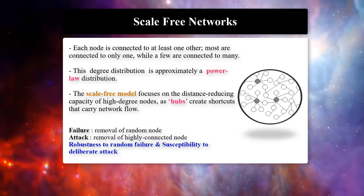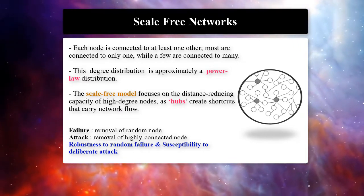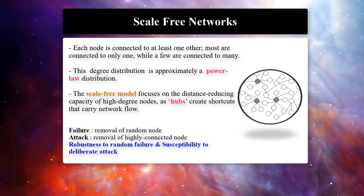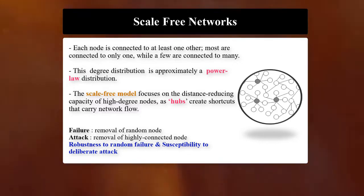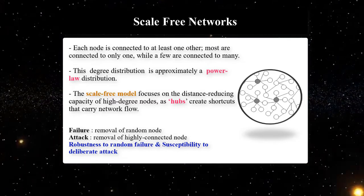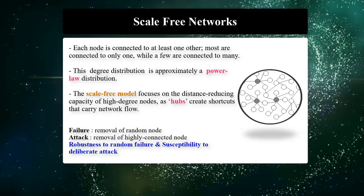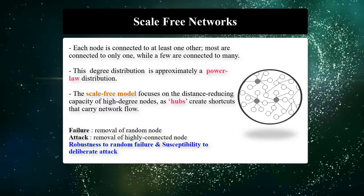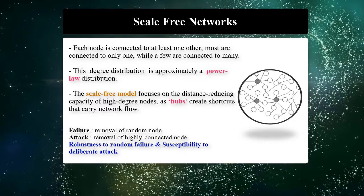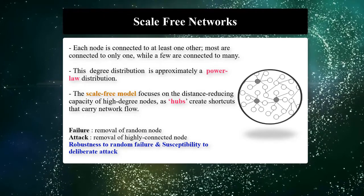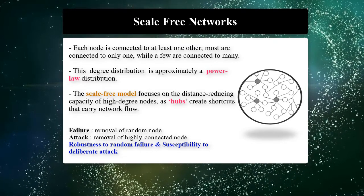The scale-free model focuses on the distance-reducing capacity of high-degree nodes, called hubs, to create shortcuts that carry network flow. The most notable characteristic of a scale-free network is the hierarchy: smaller nodes closely follow the major hubs, other nodes with even smaller degree follow those smaller hubs, and so on. This hierarchy allows for fault-tolerant behavior.